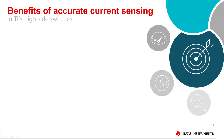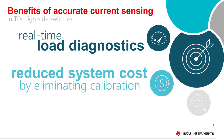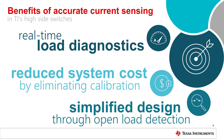One of the key benefits of a Hi-Side switch's current sensing capability is the real-time load diagnostics it provides. The high accuracy of the current sensing eliminates the need for calibration and reduces test time and system costs. Additionally, a Hi-Side switch's ability to differentiate between open and light loads helps to simplify overall designs.